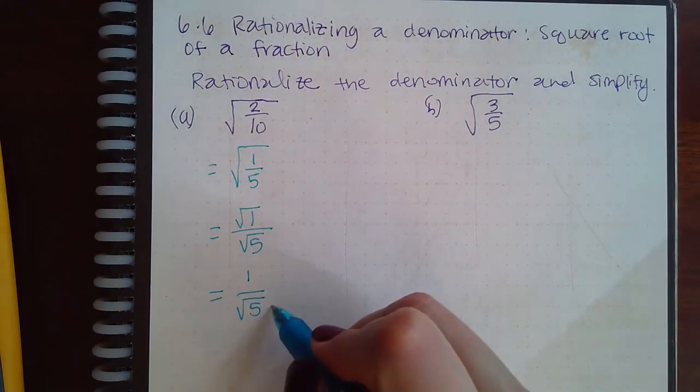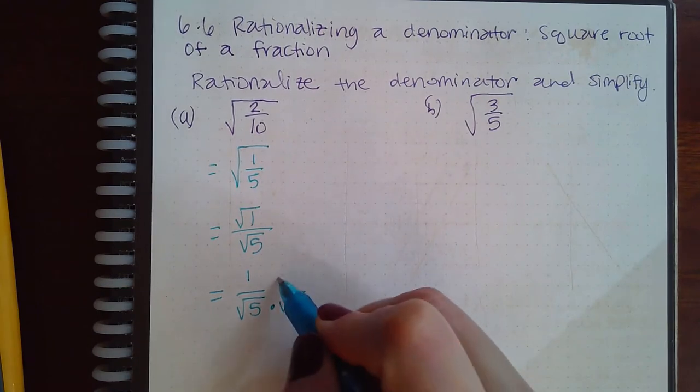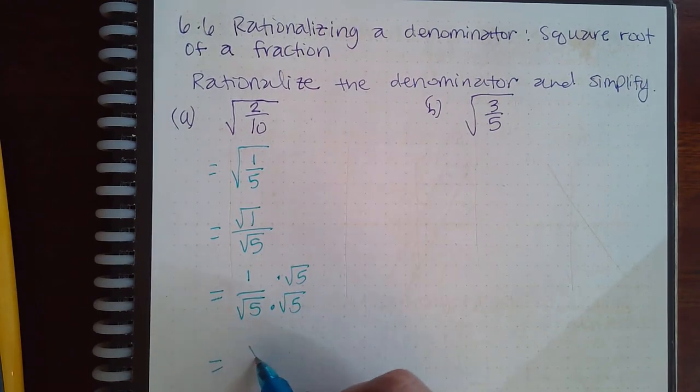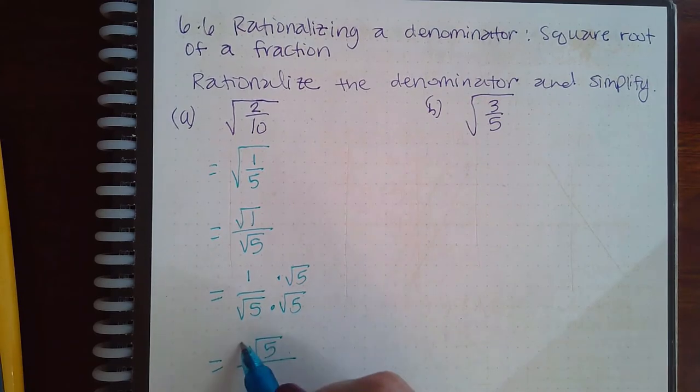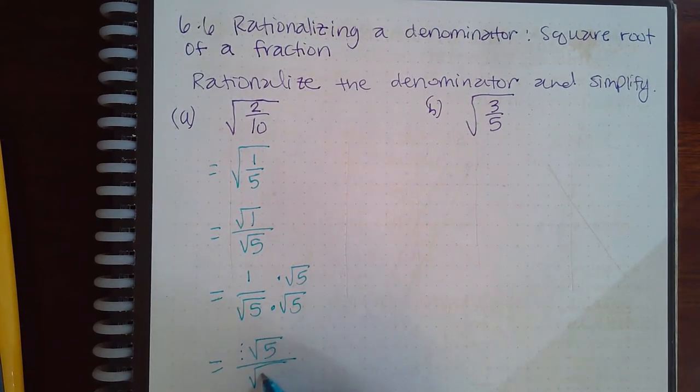So we're going to multiply by the extra five on the top and the bottom, and we end up with one square root of five, or just square root of five. At the bottom we end up with the square root of 25.